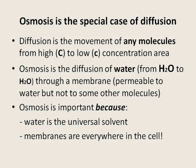Let's compare diffusion and osmosis. Diffusion is the movement of any molecules from high to low concentration. Osmosis is the diffusion of water, from high water concentration to low, through a membrane which is permeable to water but not to some other molecules and ions. So you can say that osmosis is a special case of diffusion — just one special case, but it is very important in medicine. Why? First, water is the universal solvent in the body. Second, membranes are everywhere in the cell, and they are permeable to water.